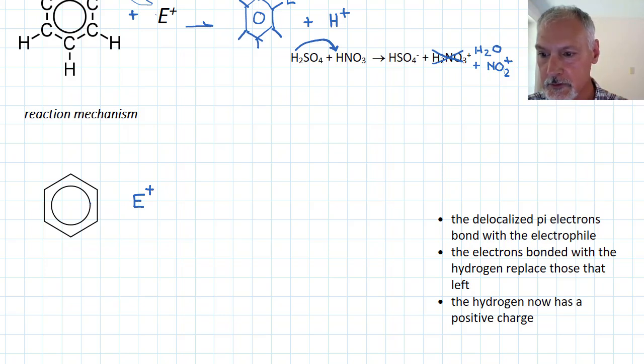What happens is I'll form benzene. The ring now has been disturbed, so I'm going to show it with a circle.